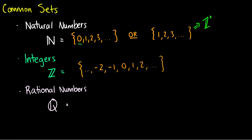Then there are rational numbers. These are kind of hard to list, so I'm going to cheat a little bit for now and say we have things like one over one, one over two, one over three, two over three, and so on and so forth. In a few slides we'll figure out a better way to write this. Rational numbers are any numbers you can write as a fraction.